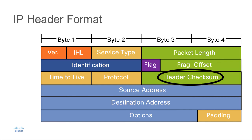That's followed by a header checksum. The header checksum is a value calculated based on the contents of the header itself, and it's used to determine if there's been an error while the packet has been forwarded.